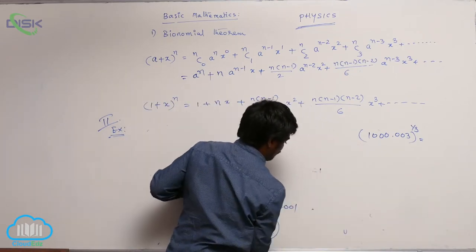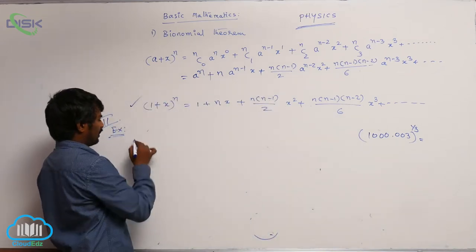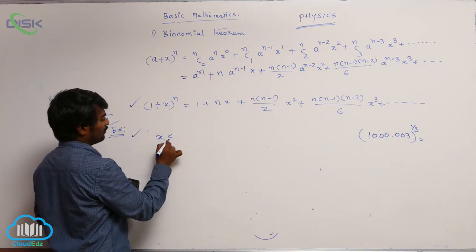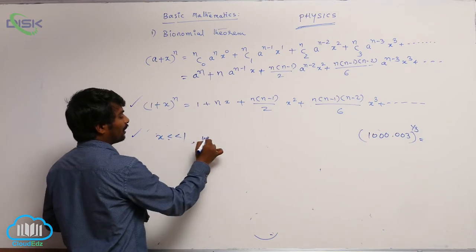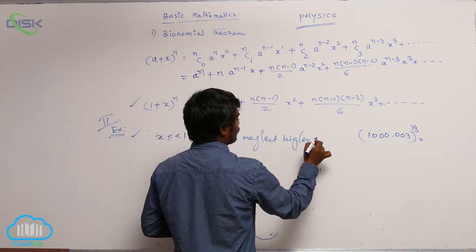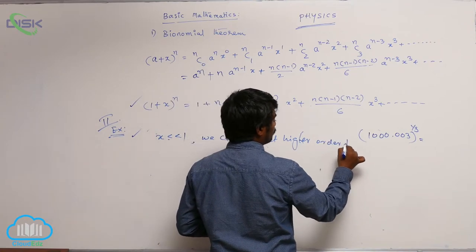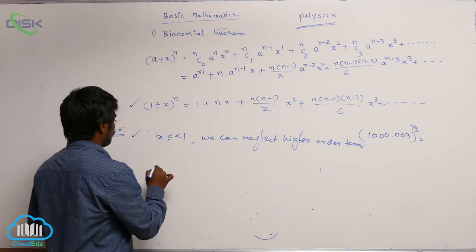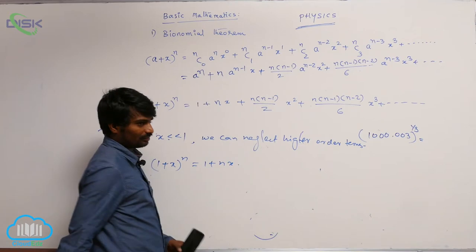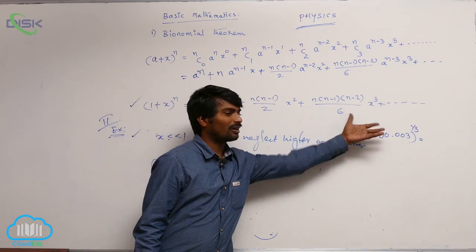If x is very much less than 1, I already told you, this is exact expansion and approximation is, if x is very much less than 1, we can neglect higher order terms. That means, 1 plus x whole power n can be written as 1 plus nx, that's all. It is not exact 100%, but approximately it is correct, because we are neglecting some higher order terms.